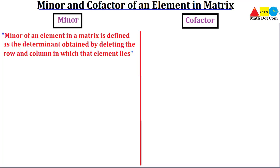We start with the minor of the matrix. The minor of an element in a matrix is defined as the determinant obtained by deleting the row and column in which that element lies. Keep in mind that the minor and cofactor concept is used when the order of a matrix is equal to 3 or greater than 3.